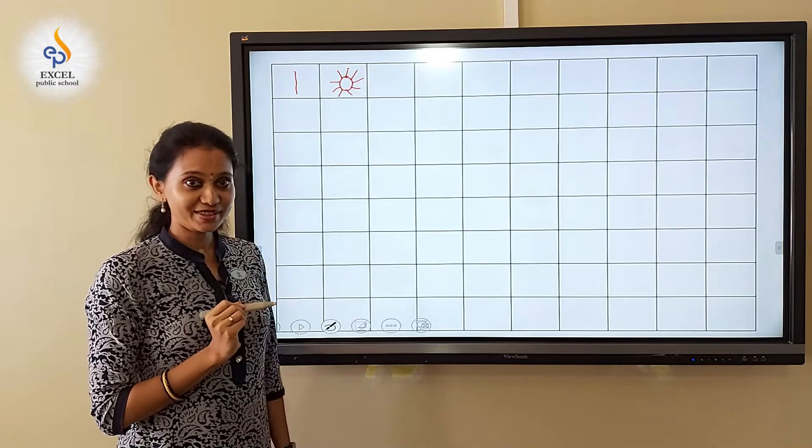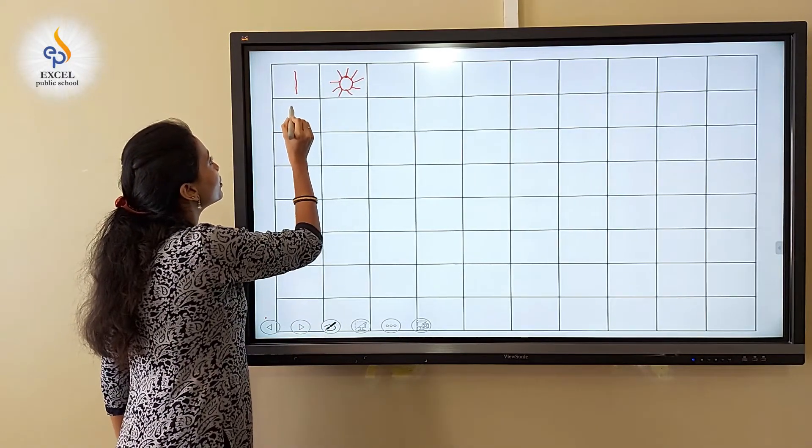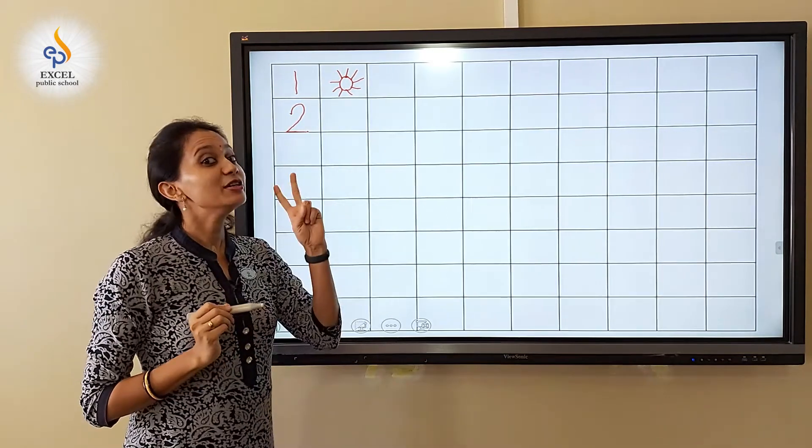The next number is number two. Mountain curve, slanting line and then sleeping line. Number two.